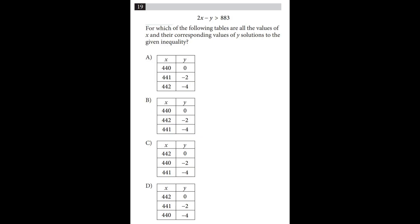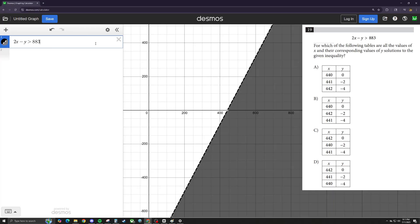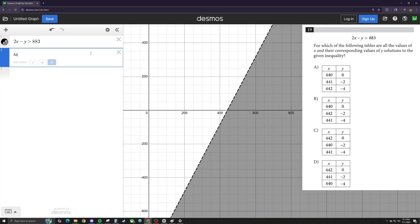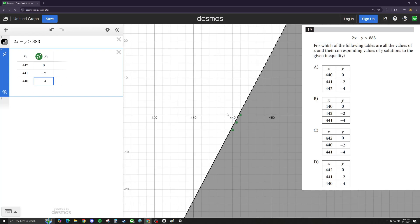Desmos also supports inequalities. Plotting out an inequality equation shows that everything in the shaded region is part of your solution. Everything in that shaded region satisfies the inequality, and anything on a dotted line is not part of your solution. So for this problem, after you put in your inequality, you could type in a table and put in all the points that are given to you as answer choices. Anything that falls within your shaded region is your answer.